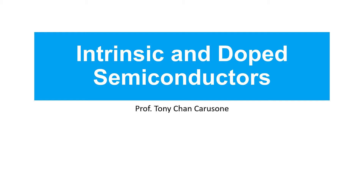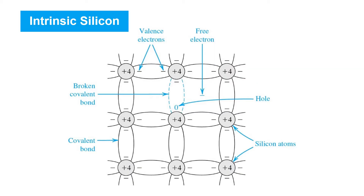In this video, we'll learn about intrinsic and doped semiconductors. Semiconductors are so named because they sometimes behave as a conductor and sometimes as an insulator. This allows devices made out of semiconductors to control current flow in interesting ways that are not possible with just resistors and capacitors and other linear devices, so we can make switches out of them and other interesting devices. Diodes and transistors, in particular, are made from semiconductors and are the basis for practically all of the interesting electronic circuits that we're going to discuss.